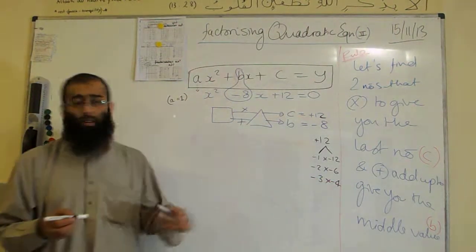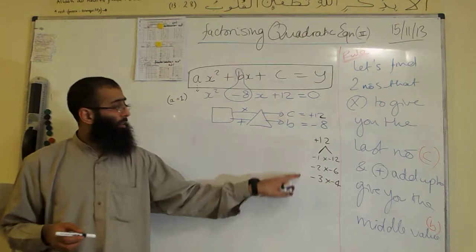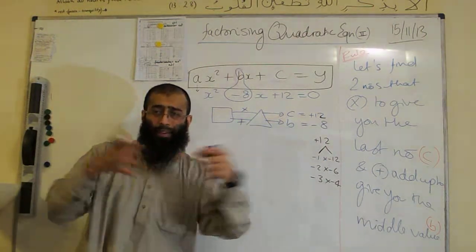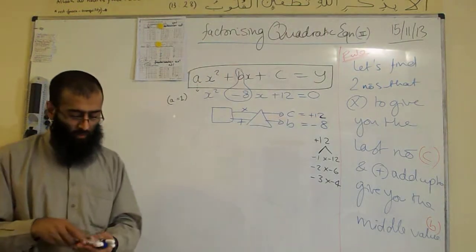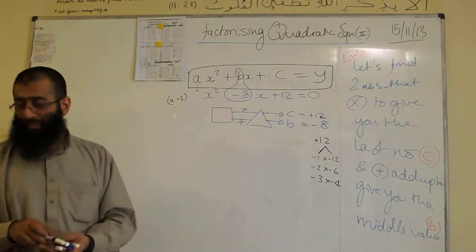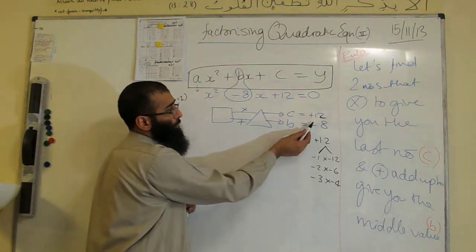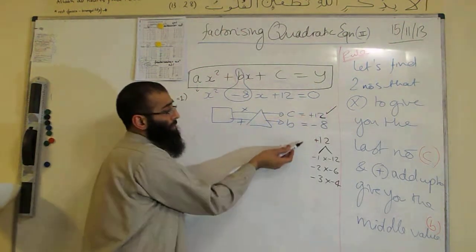Because negative times by negative gives us positive, and when you add up two negatives, it gives you a bigger negative number. All of these numbers multiply to give you plus 12, so the first condition will be met.